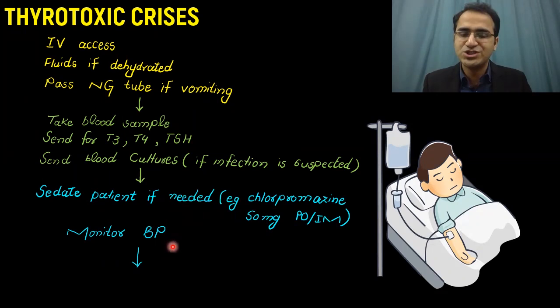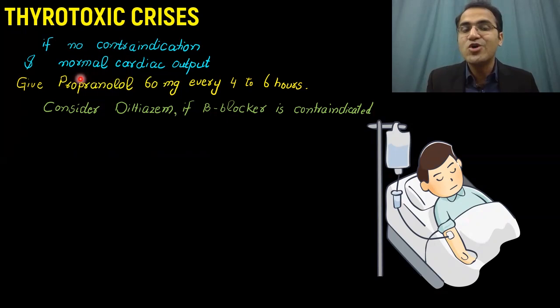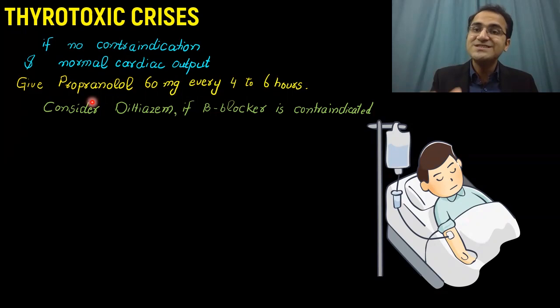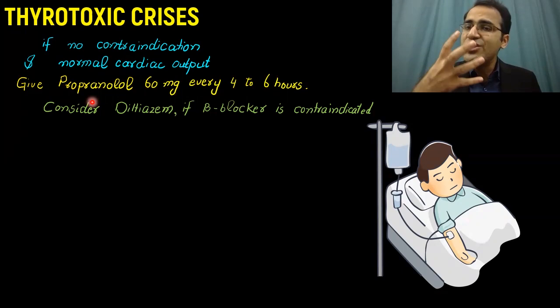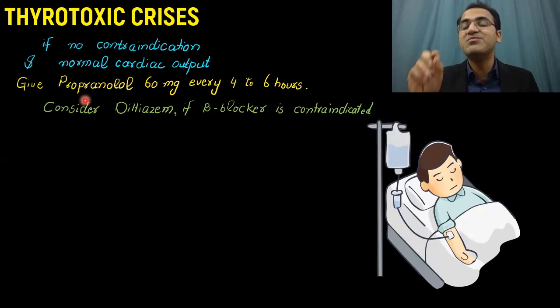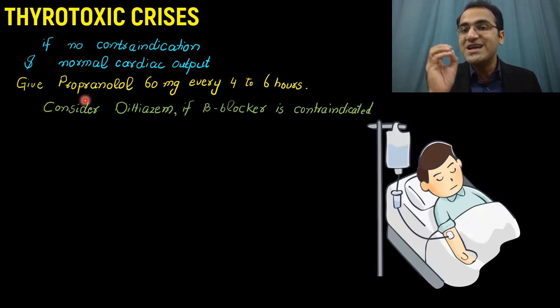If there is no contraindication and the patient has normal cardiac output, give propranolol 60 mg every 4 to 6 hours. Propranolol is a beta blocker that blocks the peripheral sympathetic effects of thyroid hormones — it stops tremors, controls blood pressure, and controls tachycardia. Additionally, propranolol inhibits the conversion of T4 to T3 in the periphery. Since T4-to-T3 conversion activates thyroid hormone, inhibiting this conversion further controls the thyrotoxic crisis.